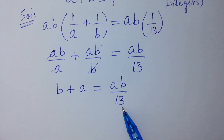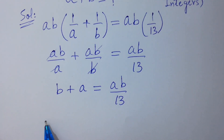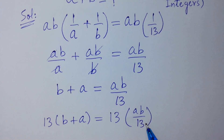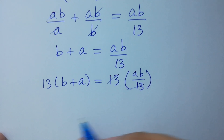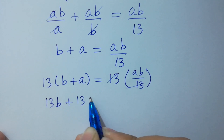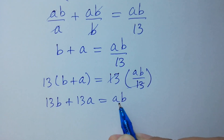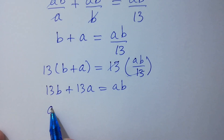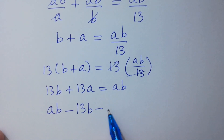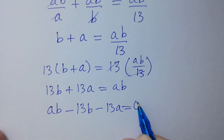To get rid of this 13, multiply by 13 on both sides. 13 times (b plus a) equals ab. So 13b plus 13a is equal to ab. It can be written as ab minus 13b minus 13a is equal to 0.